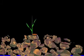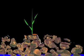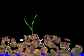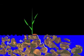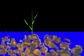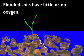Wetland plants must tolerate periodic flooding. When a plant establishes in a well-drained soil, the pore spaces between soil particles are filled with oxygen. Upon flooding, however, soil pores become filled with water, and respiration of microorganisms uses up oxygen faster than it can be replaced.